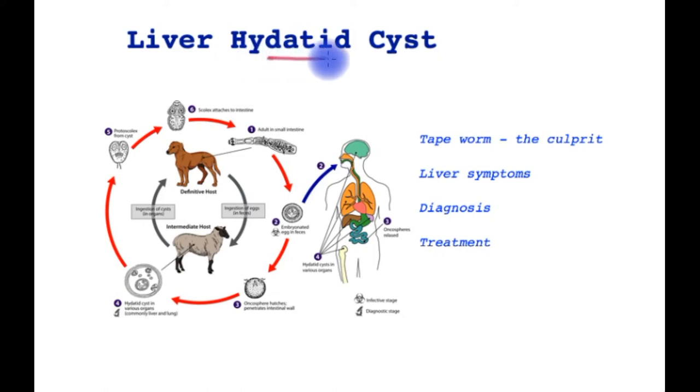The focus of this video is hydatid cyst of the liver. It is one of the cystic conditions afflicting the liver, common in sheep-rearing parts of the world. We will learn about the tapeworm which is the culprit, what symptoms it causes in the liver, its diagnosis and treatment.